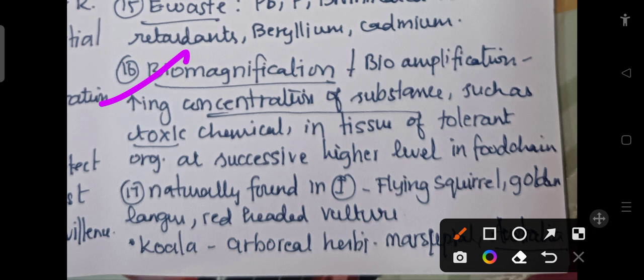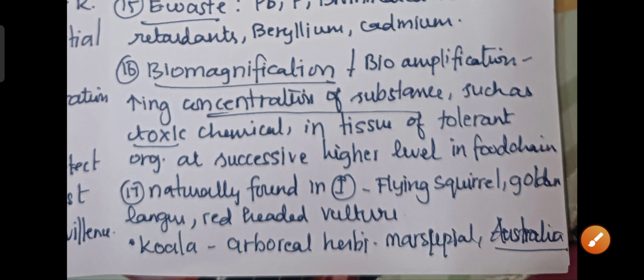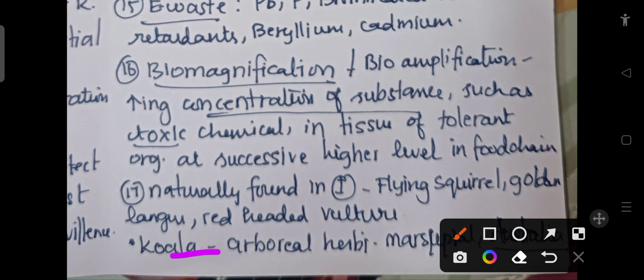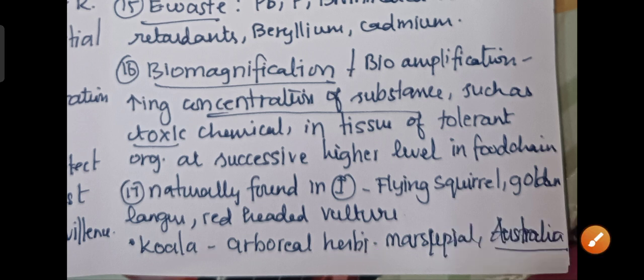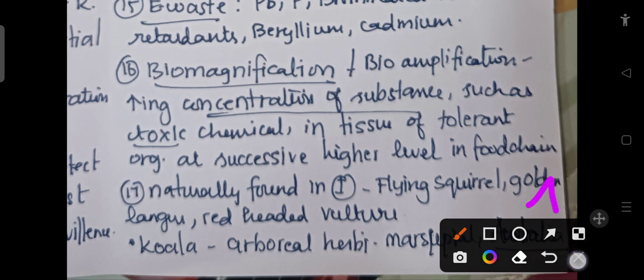As we move upwards in the food chain, the concentration of toxicants is found at a higher level — this is called bioamplification. Organisms naturally found in India include the flying squirrel, golden langur, and red-headed vulture. The koala, however, is an arboreal herbivorous marsupial native to Australia, not India.